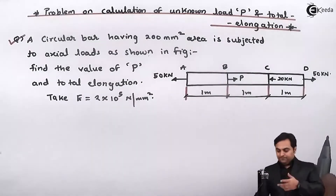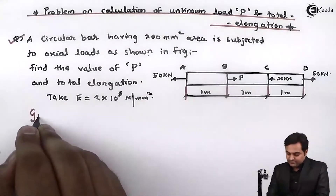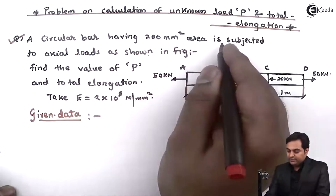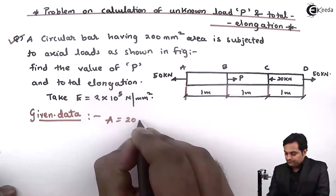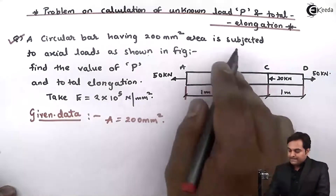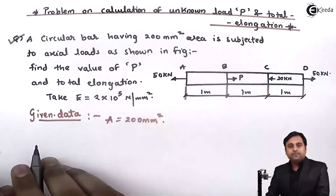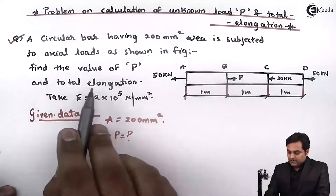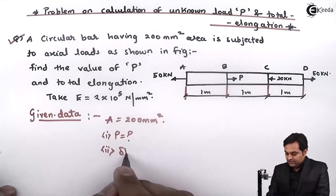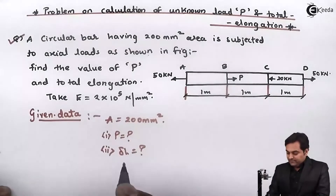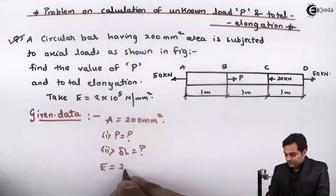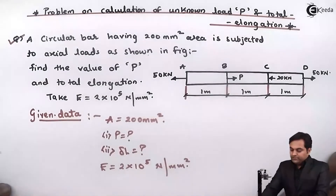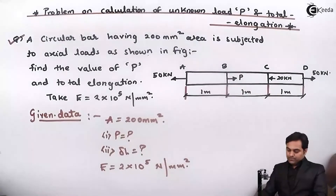Writing the data: a circular bar having 200 mm square area is subjected to axial loads as shown in figure. Find the value of P — that is the first question — and total elongation, Delta L, which is the second question. Take Young's modulus E as 2×10⁵ N/mm².